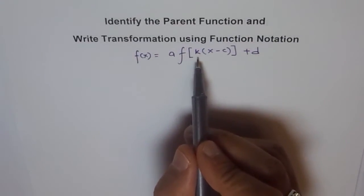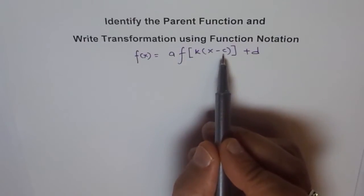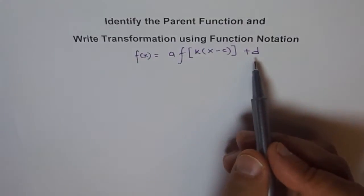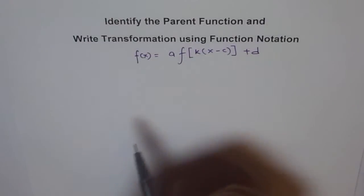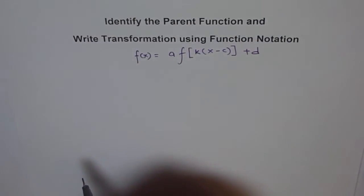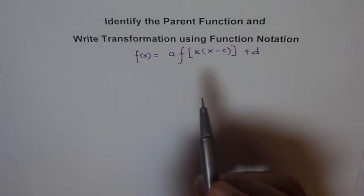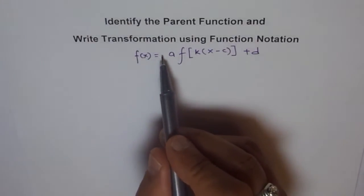And c is moving right c units and d moving some units up, assuming that all of them are positive, greater than one. Now if there is a negative here, then we say it's a reflection on x-axis.